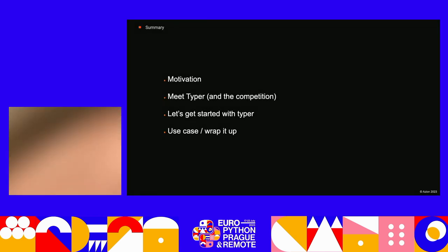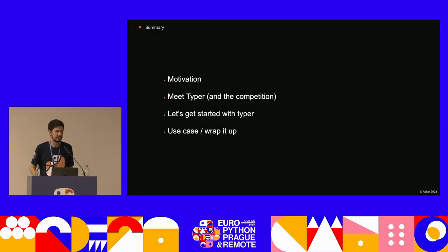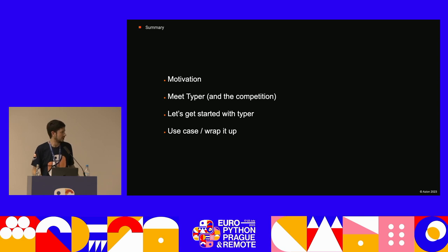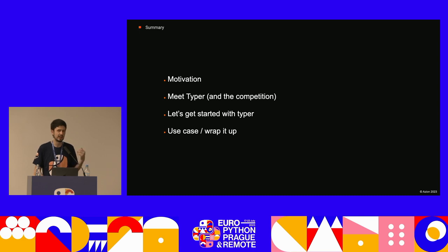Our schedule for today: we're going to talk about motivations for this presentation — answering the big questions like why am I here, why are you watching me, what problems you can and cannot solve with CLIs. Then we'll get to know Typer and a few other libraries that do the same job. We'll look at some code, and finally discuss the use case at Asium with a pros and cons comparison.